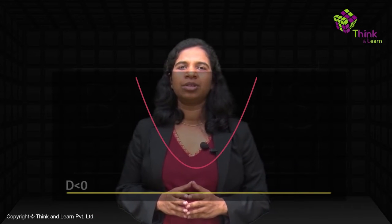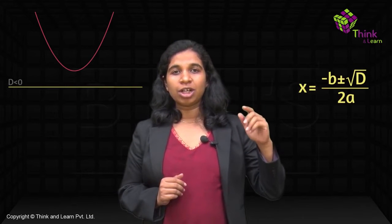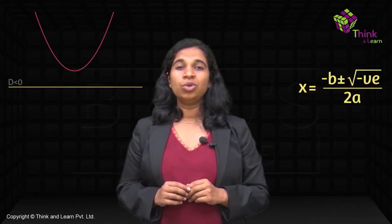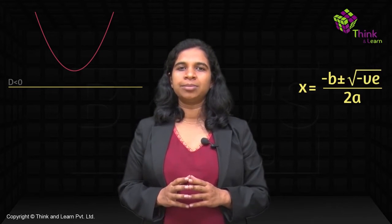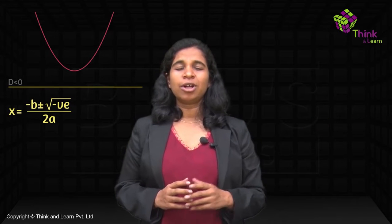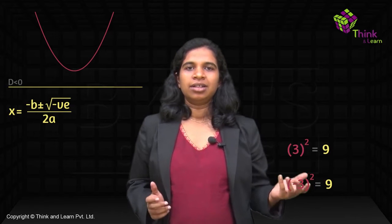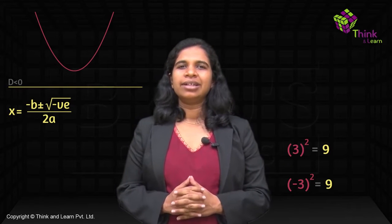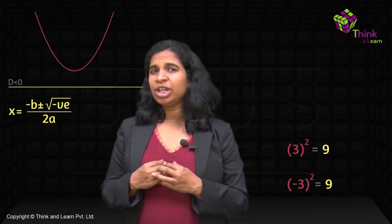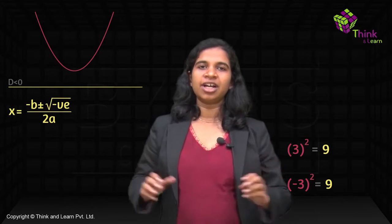If D is less than 0 and you go back to the quadratic formula, the root is given by x = (-b ± √D) / 2a. When D is negative, you need to find the square root of a negative number. What is √(-9)? We don't know, because (+3)² = +9 and (-3)² = +9 — the square of any number we know is always positive. So it does not exist in real numbers.